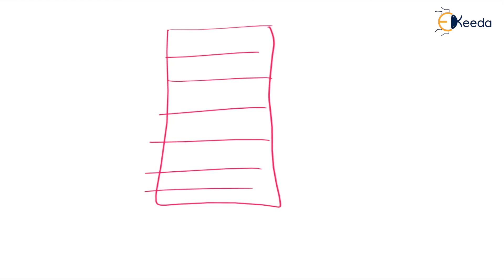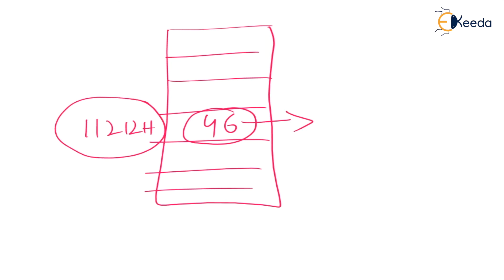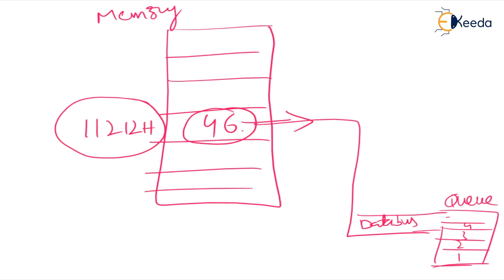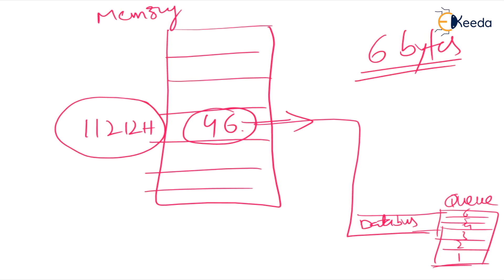So the address is 22212H and suppose some data — say 46 — is stored there. To access that data, we first calculate the physical address. After calculating the physical address, the data is transferred through the data bus to the queue. The size of the queue is 6 bytes. All instructions are not the same size; the biggest instruction size in the 8086 microprocessor is six bytes, that is why the queue is 6 bytes.